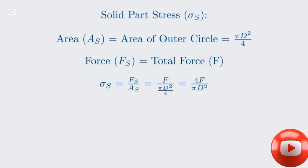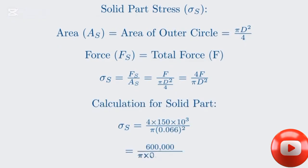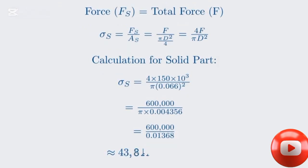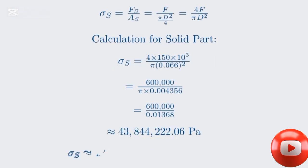Let's substitute our values and perform the calculation. We have 4 times the force, divided by pi times the outer diameter of 0.066 meters squared. This gives us approximately 43,844,432.06 pascals. Converting this to megapascals, we get our final answer. The stress in the solid part, sigma s, is approximately 43.844 megapascals. This, once again, is identical to the memo's answer. We have now successfully calculated the stress in both parts of the rod.